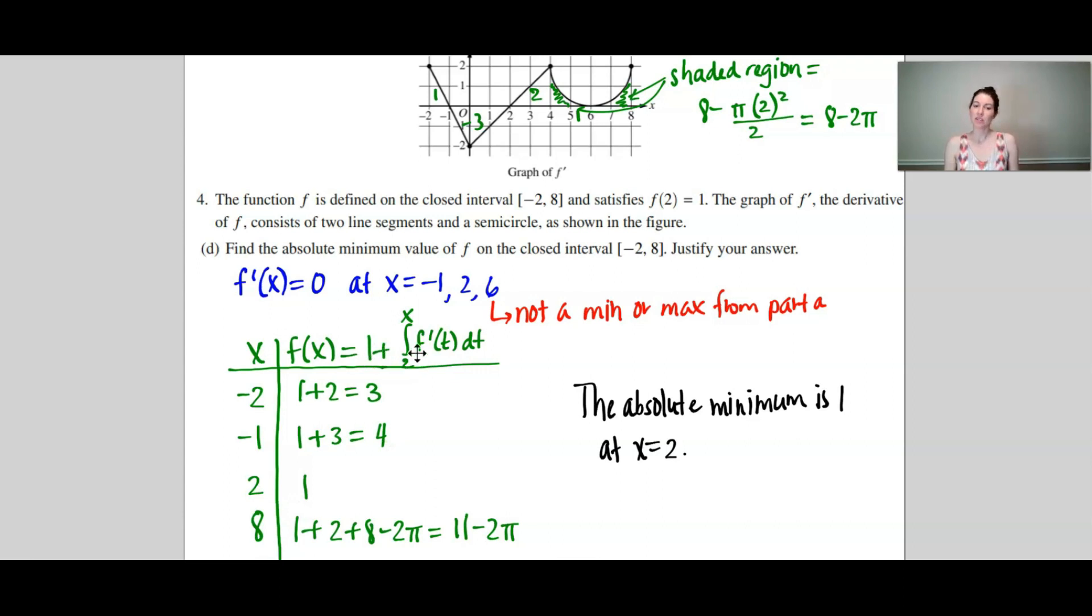Plugging in 2, well, that'd be 1 plus 2 to 2 would just be an integral of value of 0. So 1 plus 0. And then 8, I had to take 1 and then add the area from 2 to 8. And you can see up here, that would be this area of 2 plus that value we talked about of 8 minus 2 pi for a value of 11 minus 2 pi.